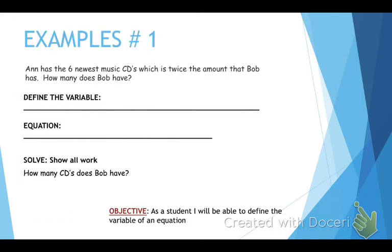Alright, so here's our goal. Our goal is to be able to do problems like we see here. Number one, it says Anna has the six newest music CDs, which is twice the amount that Bob has. How many does Bob have? And you'll notice that we need to define the variable. That's the same thing that we have done when we did expressions in the last unit. But we also need to write the equation and then we need to solve it.